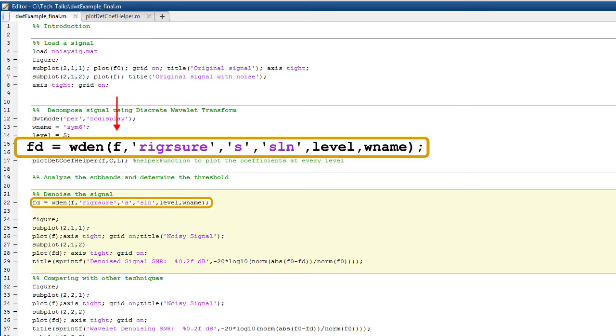The first parameter F is the noisy signal. The second parameter specifies the thresholding technique, in this case sure-shrink. S denotes soft thresholding and the parameter SLN indicates threshold rescaling using a single estimate of noise based on the first level coefficients. Level indicates the wavelet decomposition level and the last parameter specifies the wavelet which is SIM6 in this case.